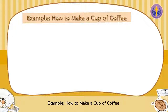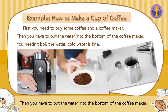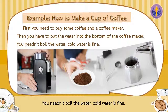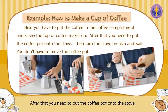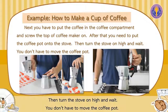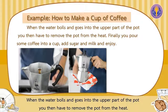Example: How to make a cup of coffee. First, you need to buy some coffee and a coffee maker. Then you have to put the water into the bottom of the coffee maker — you needn't boil the water, cold water is fine. Next, you have to put the coffee in the coffee compartment and screw the top of the coffee maker on. After that, you need to put the coffee pot onto the stove. Then turn the stove on high and wait — you don't have to move the coffee pot. When the water boils and goes into the upper part of the pot, you then have to remove the pot from the heat.